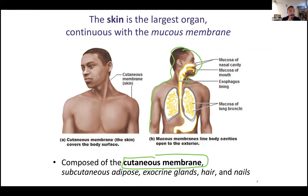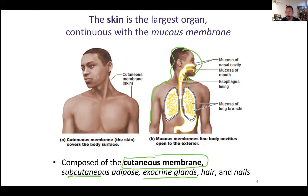You've got cutaneous membrane — that's part of your skin. Deep to the cutaneous membrane, you have subcutaneous layers. The subcutaneous layer is made of adipose. You have exocrine glands like sweat and sebaceous glands. We'll get to those in a minute. Hair and nails — all of those things make up your integumentary system.